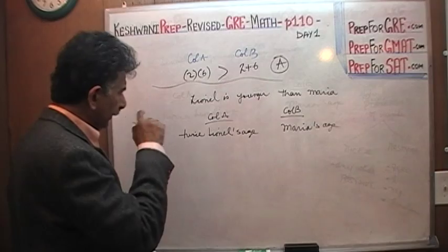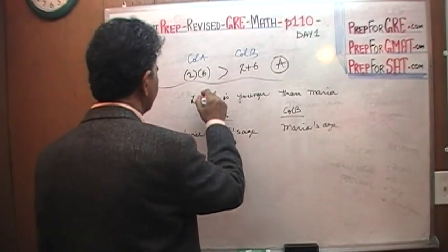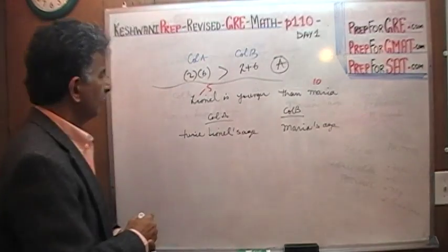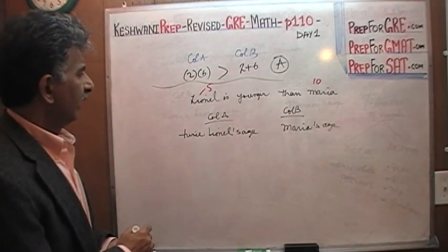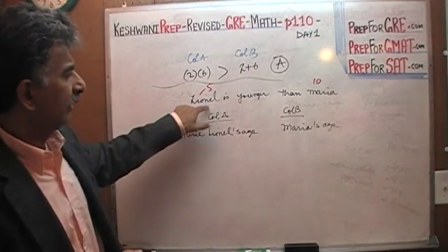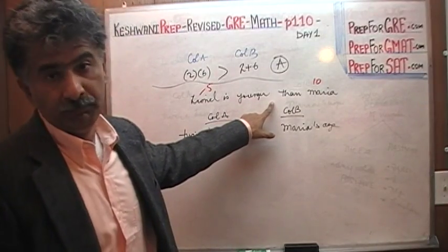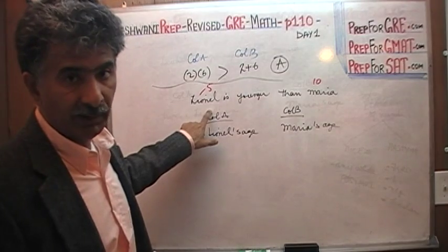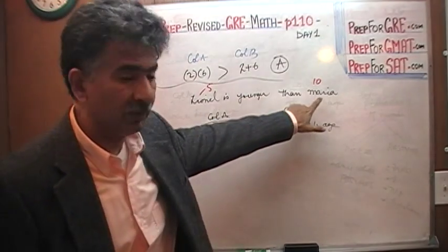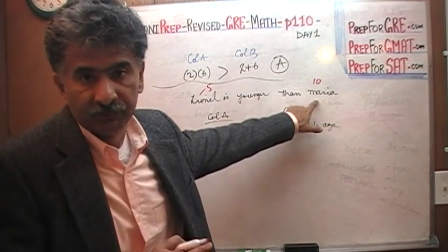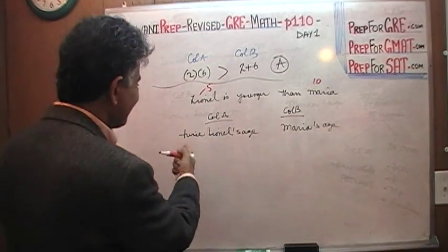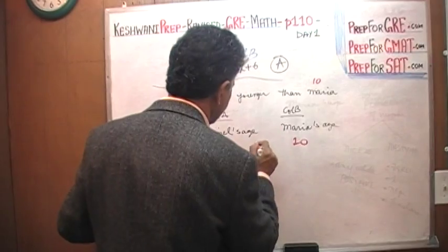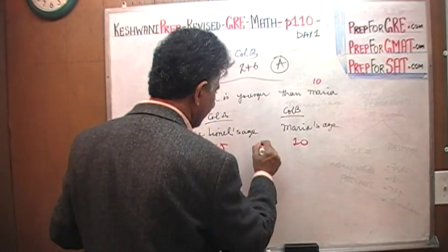Let's pretend Lionel is five years old and Maria is ten years old. We're told Lionel is younger than Maria, but not how much younger. Twice Lionel's age would be 2×5 compared to Maria's age which is 10. In this case these two quantities are equal, the answer is C.